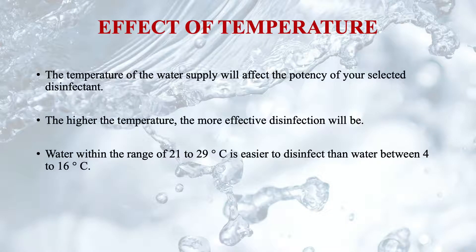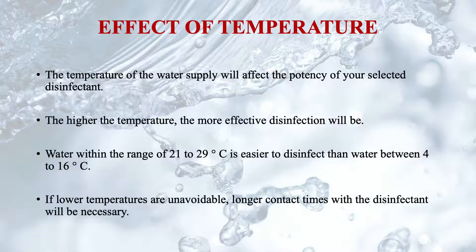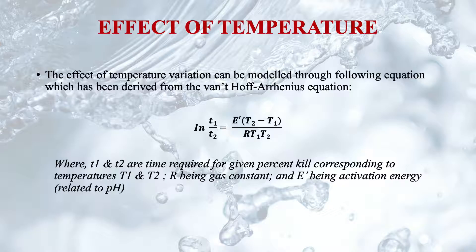Another factor affecting disinfection is temperature. As many chemical reaction rates are affected by temperature, it also affects the disinfection process. The temperature of the water supply will affect the potency of the selected disinfectant. The higher the temperature, the more effective disinfection will be. Water within the range of 21°C to 29°C is easier to disinfect compared to water between 4°C and 16°C. If lower temperatures are unavoidable, longer contact times with the disinfectant will be necessary.